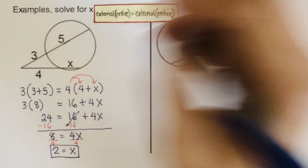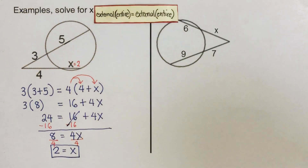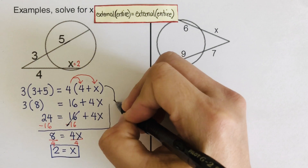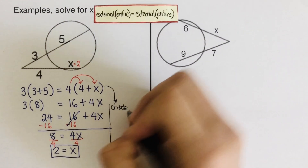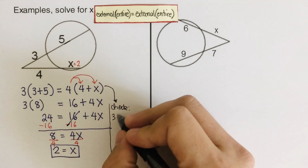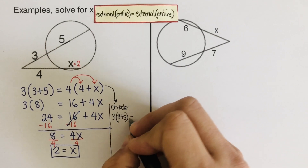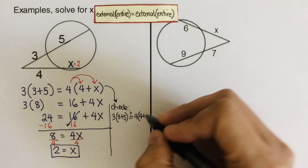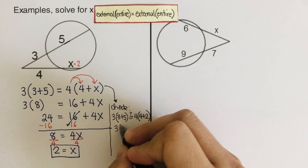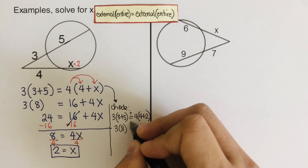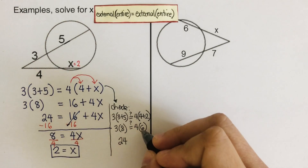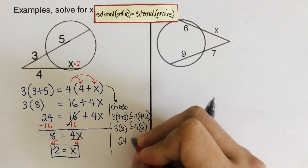We divide both sides by 4, giving x equals 2. To verify, we plug x back in: 3 times (3 plus 5) equals 4 times (4 plus 2), so 3 times 8 equals 4 times 6, which gives 24 equals 24. Our answer x equals 2 is correct.